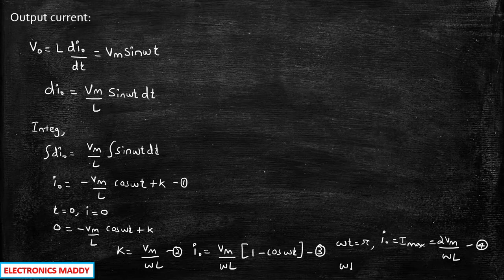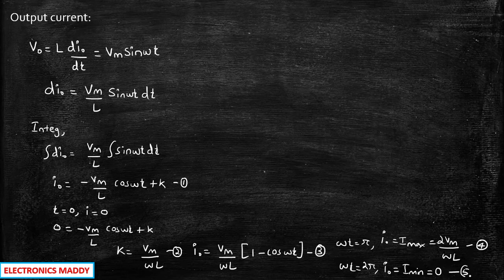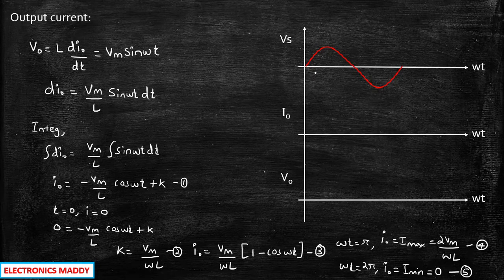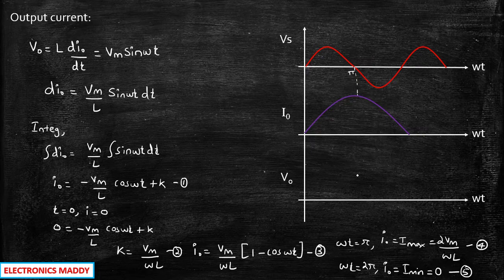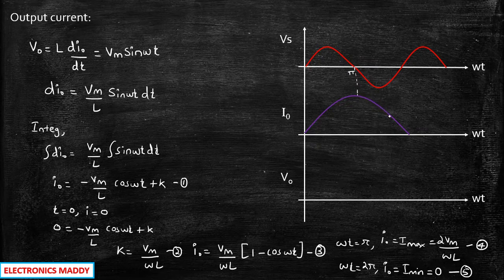When ωt = 2π, we get the minimum value of current: i_min = 0, because cos(2π) = 1, and 1 − 1 = 0. This is required in order to analyze the waveforms. During the positive half-cycle, the current i_out gradually starts charging, reaching i_max at ωt = π — approximately twice the magnitude. During the negative half-cycle, the stored energy starts discharging, and according to Lenz's law the current still flows in the same direction. During the next positive half-cycle, it starts charging again and the process repeats. This is the expression for i_out.